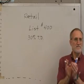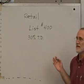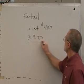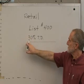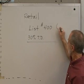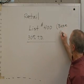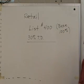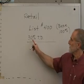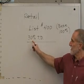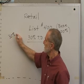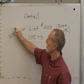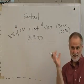That means we're gonna get to pay less for that than what we're gonna sell it for, obviously, or we can't stay in business, right? So in these scenarios, the list price is always the base. It's always the 100%. If we say we get a 30% trade discount, that means we get 30% of the list price or 30% off the list price. That's what we're saving.